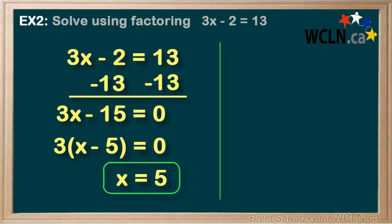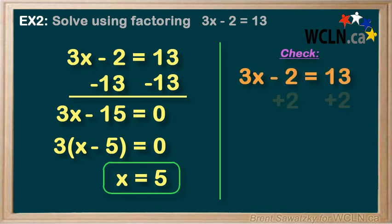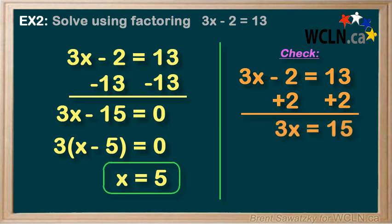We can always use our isolating the variable skills to confirm our answer. So let's add 2 to both sides. 3x equals 15. And we'll divide both sides by 3.